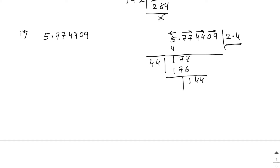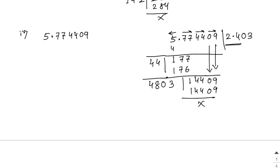Bring down 44 to get 144. The current quotient is 2.4, treated as 24. Double of 24 is 48. Try 481: that exceeds 144, so place a 0 in the quotient and bring down two zeros. Try 4803×3=14409 — that works. So the square root of 5.774409 equals 2.403.